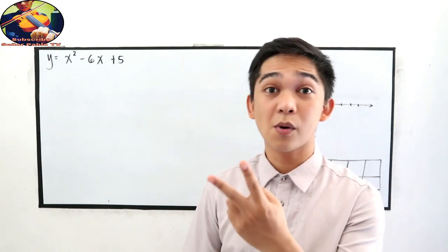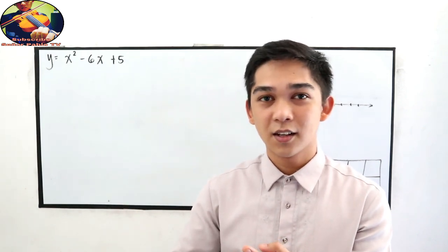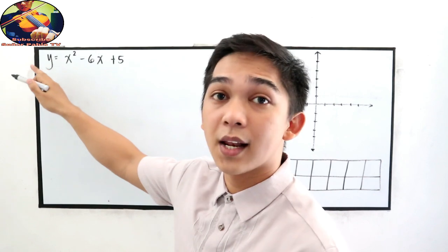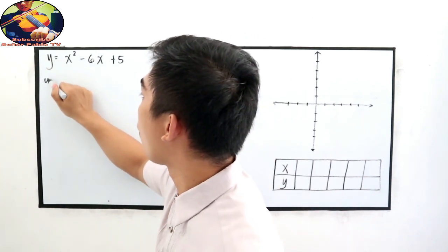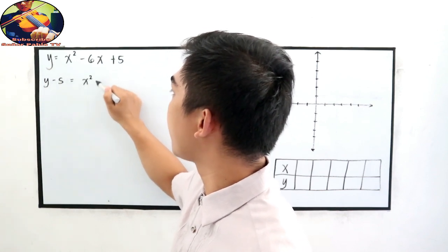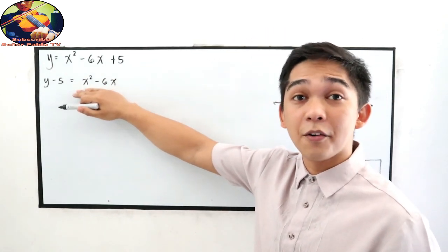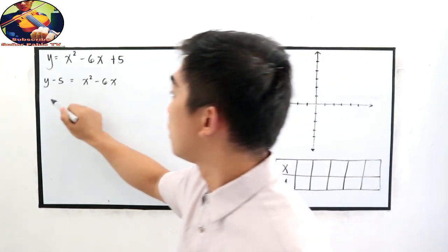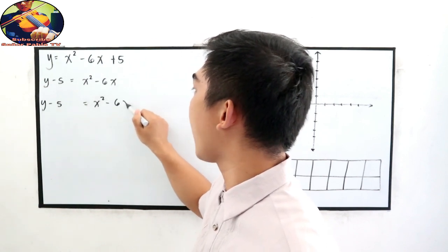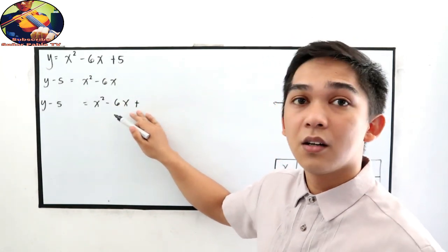We have two possible ways: rewrite into vertex form or use the formula. Let us first rewrite into vertex form. Transpose 5 to the left side of the equation, so that gives us y minus 5 is equal to x squared minus 6x. On the right side, make it into a perfect square trinomial.